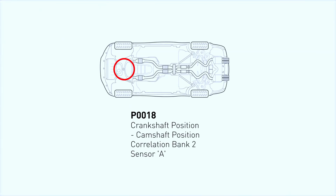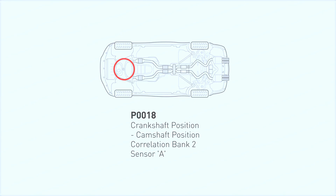Before we dive into the fix, let's talk about what the P0018 code actually means. This error occurs when the engine control module (ECM) detects a mismatch between the crankshaft and camshaft positions on bank 2 of your engine. This can lead to poor performance and even damage if left unresolved.